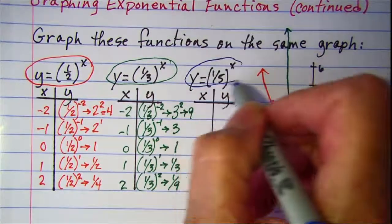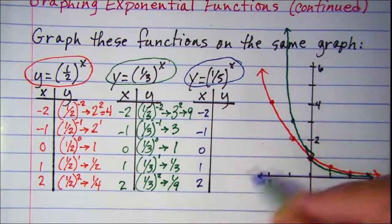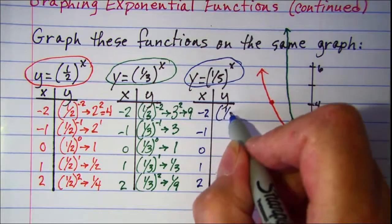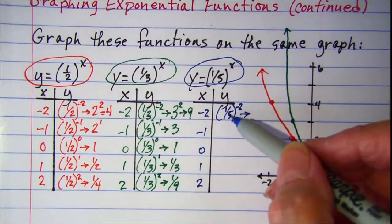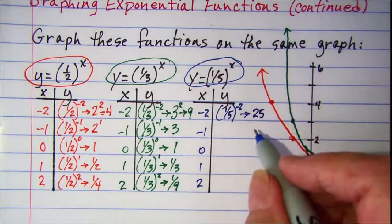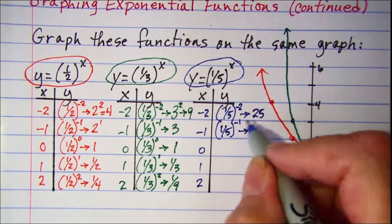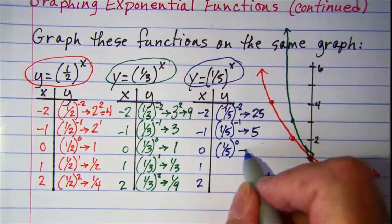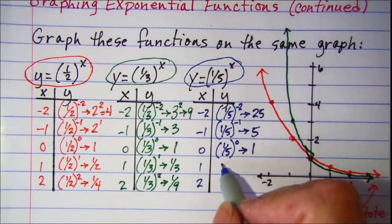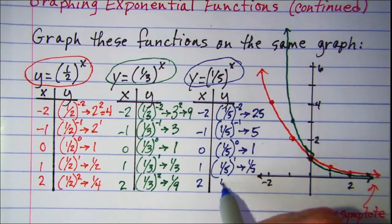And then let's graph y equals one fifth to the x. Again using x values of negative 2, negative 1, 0, 1, and 2. When x is negative 2, we have one fifth to the negative 2 — the negative makes that 5 and then squared is 25. When x is negative 1, we have one fifth to the negative 1, so that negative makes it 5. When x is 0, we have one fifth to the zero, which is always 1. When x is 1, we have one fifth to the first power, which is one fifth. And when x is 2, we have one fifth squared, which is one twenty-fifth — very small.